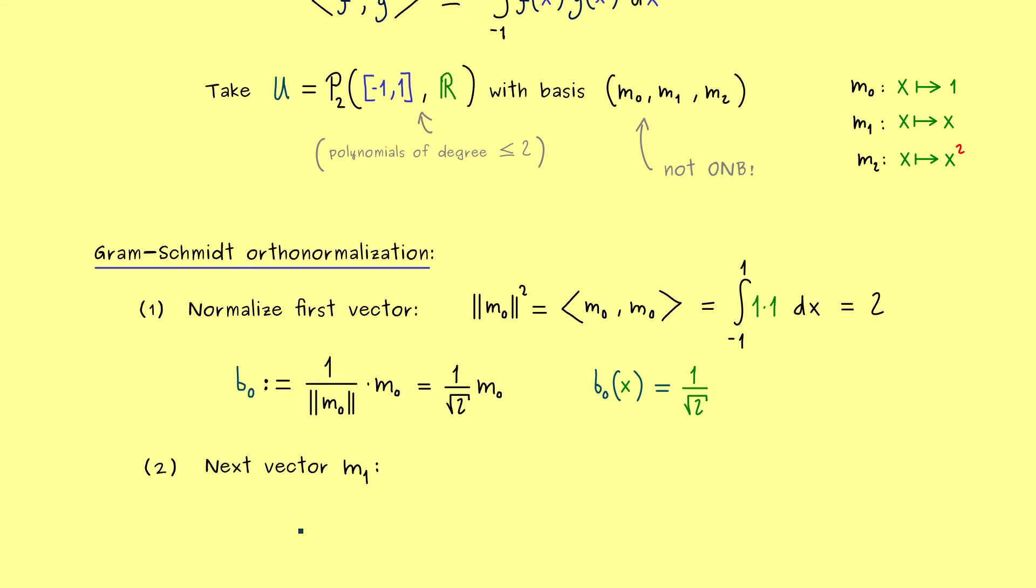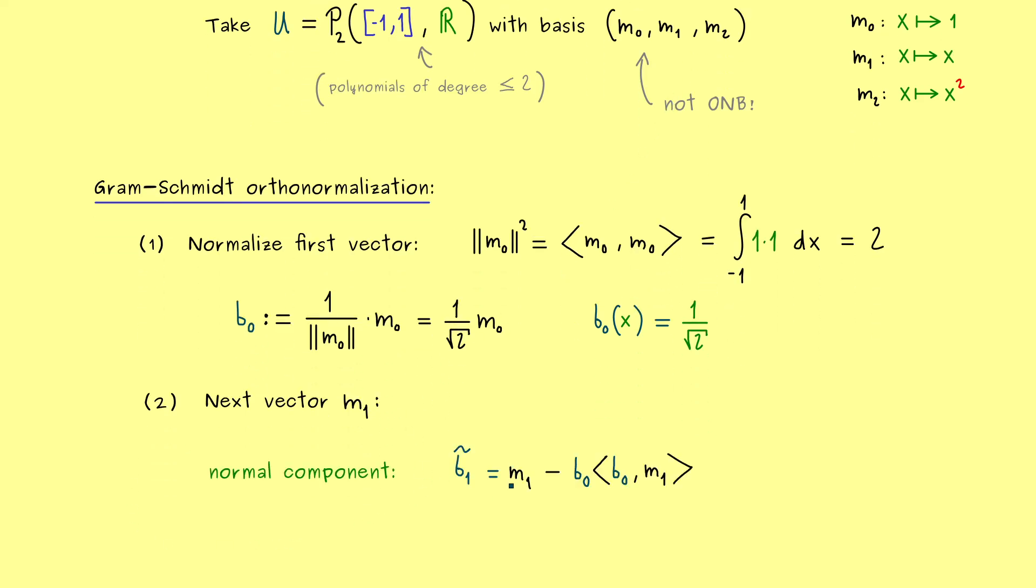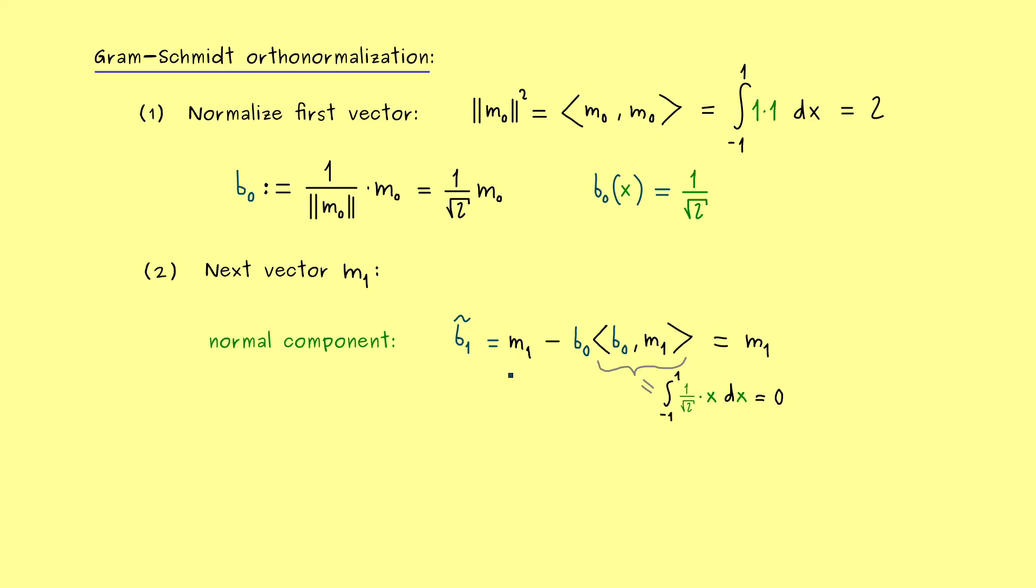Ok, then let's go to the next step, where we deal with the vector m1. So there, please recall, we take the orthogonal projection, but then we consider the normal component. So essentially what we have to calculate is this inner product here. And we can do this very quickly, because it's just the integral from minus 1 to 1 of the constant function times x. And there it's not hard to see at all, that this is actually 0. In other words, our B1 tilde here is simply m1 again. So you see, the orthogonality of m0 and m1 was already given.